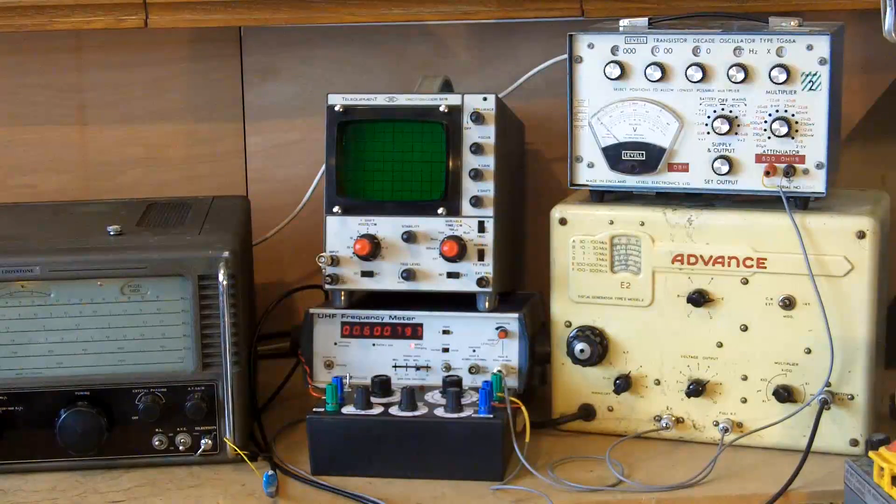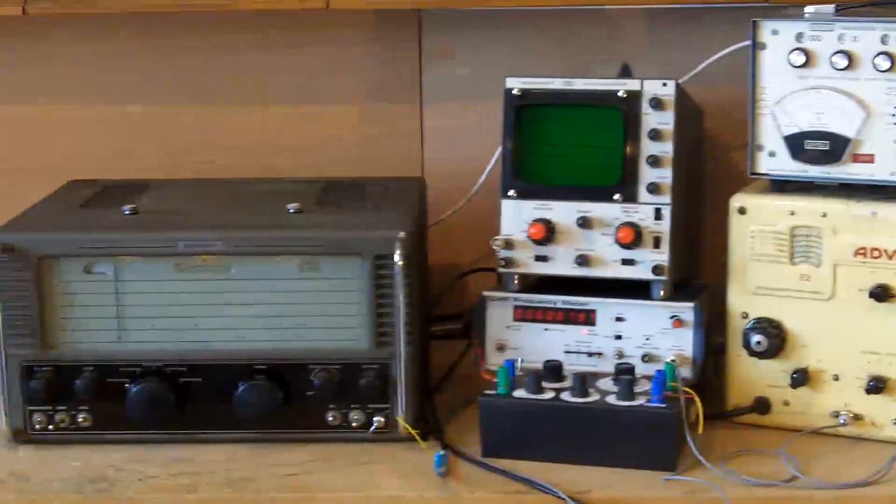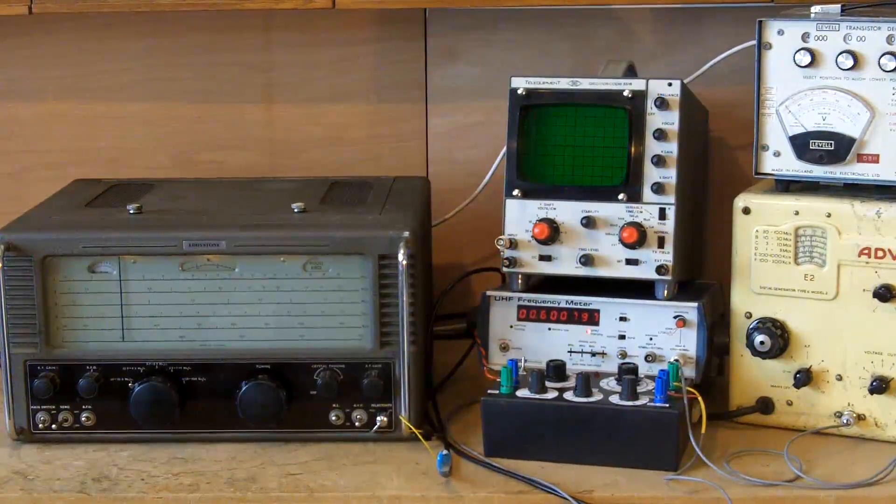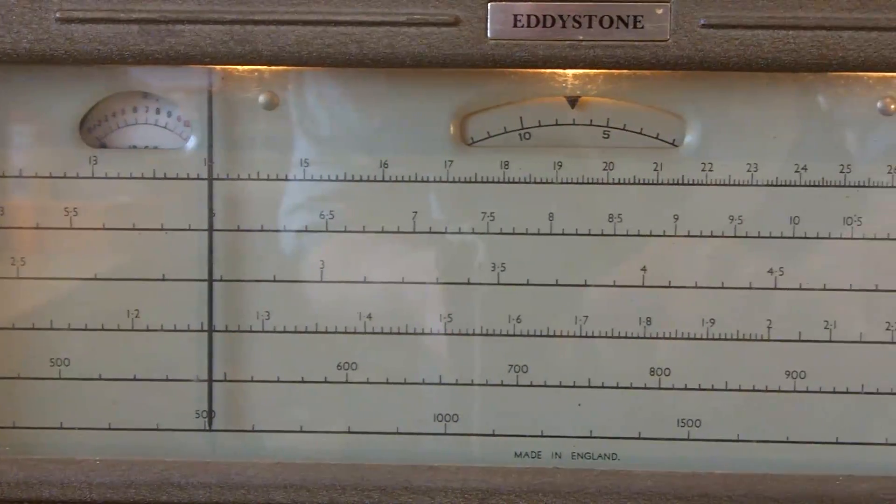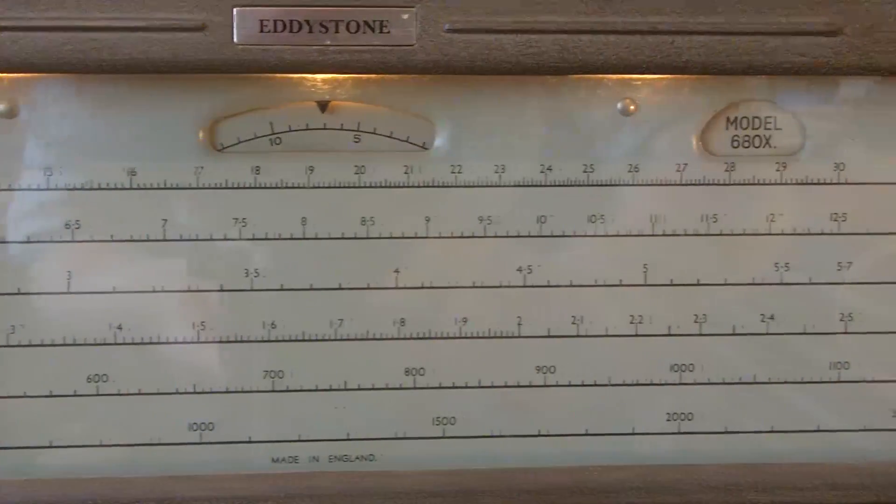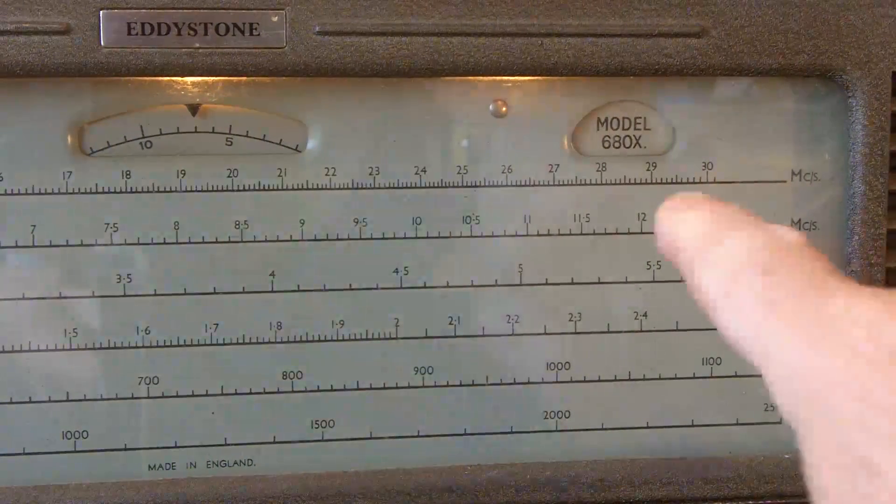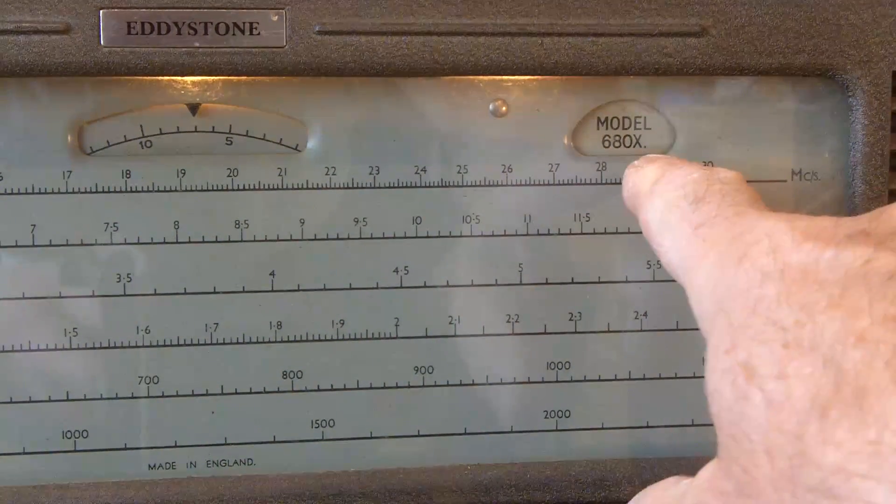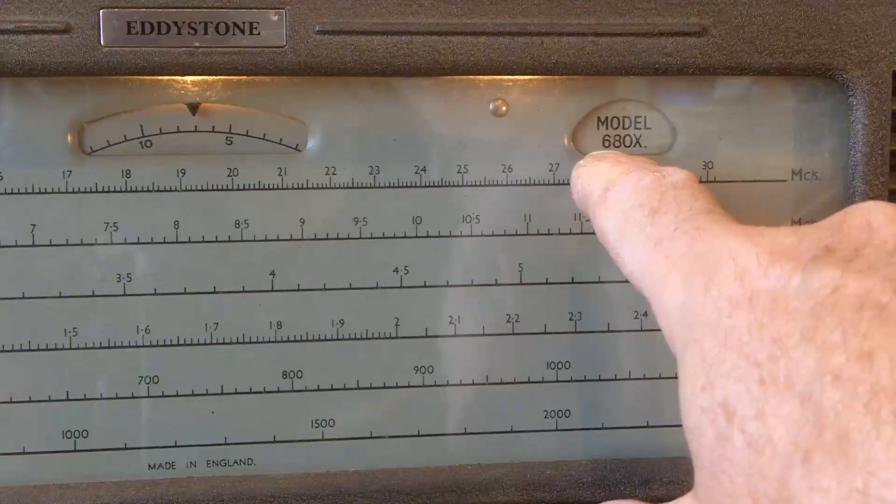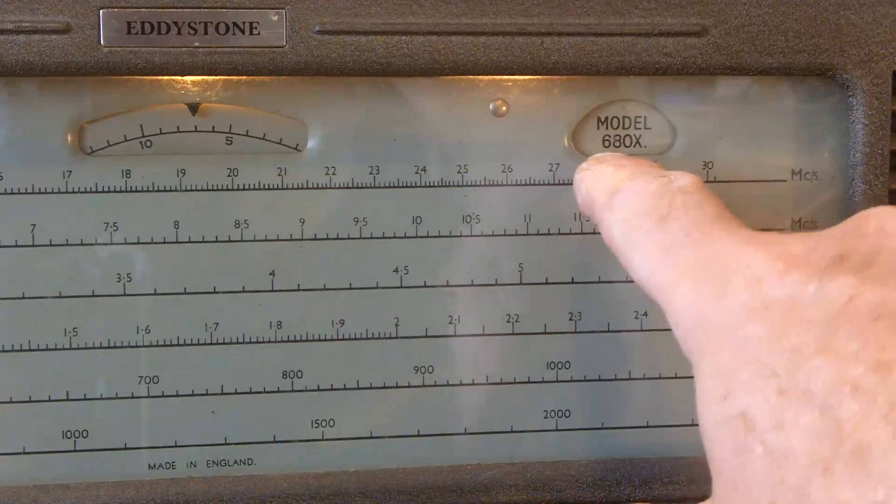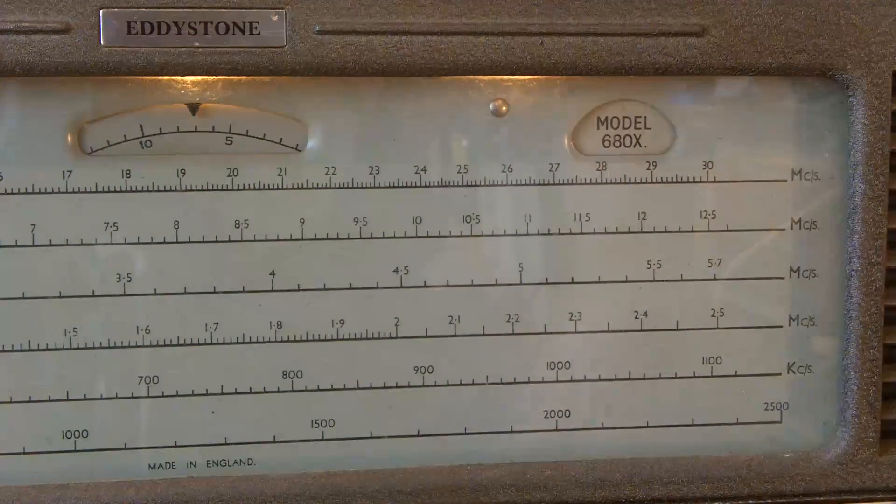Okay, I'll show you what the alignment looks like on the radio at the moment. So this is the tuning dial and you'll see it says 680X. The serial number plate actually says S, so Sierra 680 X-ray.